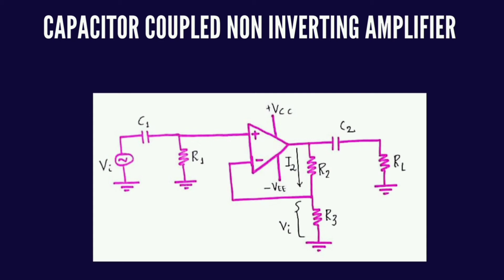If you could observe, that part is completely your non-inverting amplifier. For that, we will be applying the capacitors. So at the input, at the non-inverting terminal, you can observe C1 is connected with input voltage VI. And across the output, C2 is being connected along with resistor RL at the output. RL will be your load resistor.